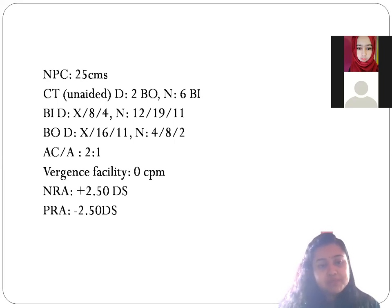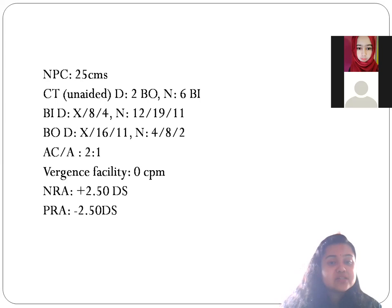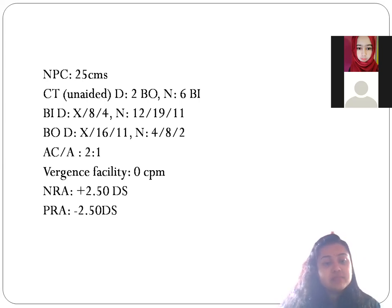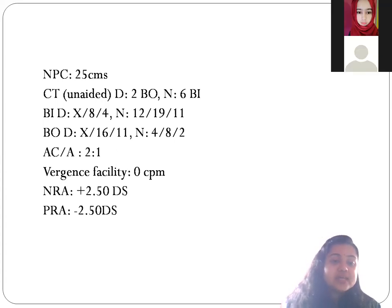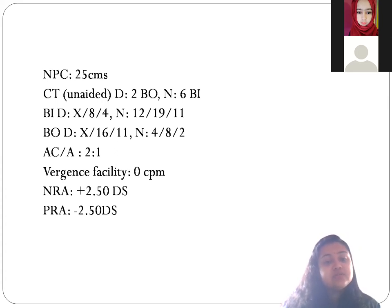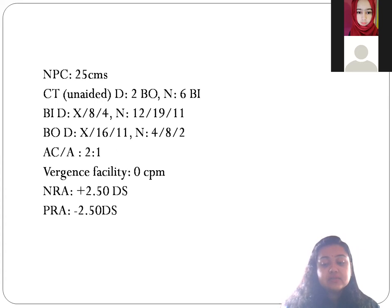This is a very difficult case to manage. Base-in for distance: no blur, break at 8, recovery at 4. Near: 12, 19, 11. Base-out for distance: no blur, 16, 11. Near: 4, 8, and 2. The AC/A ratio is also lower. Vergence facility is 0 cycles per minute.